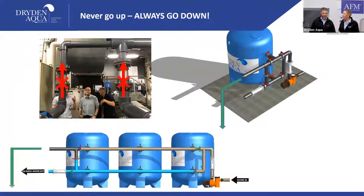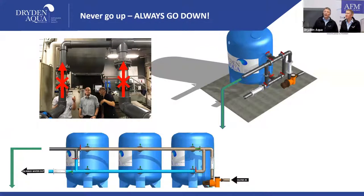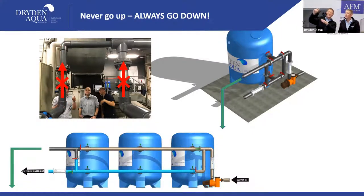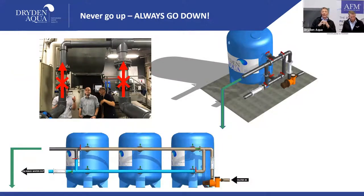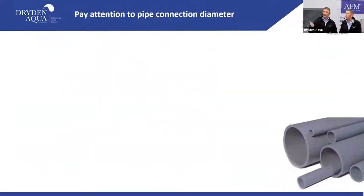Coming to the end. Here's a pool in Belgium — they made it nicely, but you see the red crosses: the backwash line. Never go up — if you go up, you create an artificial bottleneck. Backwash should always be pressure-free; in Germany it's even the law. So never go up, always go down. Simple rules: faster is better, never go up, always go down.